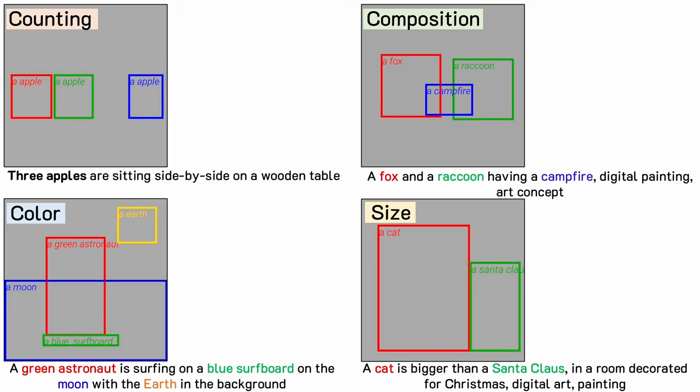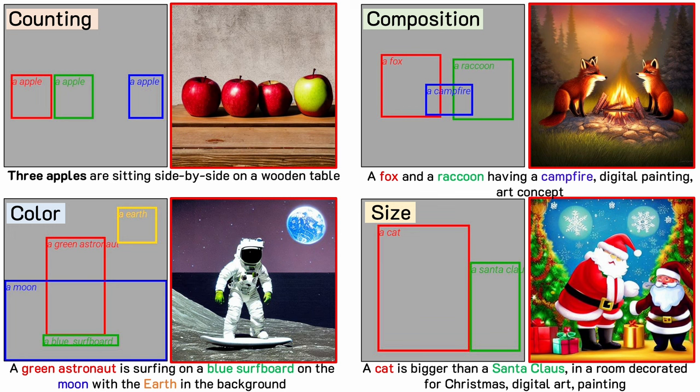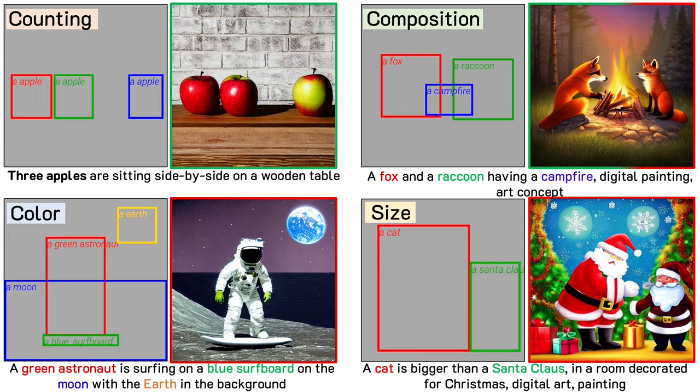However, existing grounded text-to-image generation methods, like GLIGEN, fail to respect the layout, resulting in incorrect count, mixing up objects, and ignoring color attributes. We present a training-free, plug-and-play approach to improve the compositional capability of text-to-image generation models.